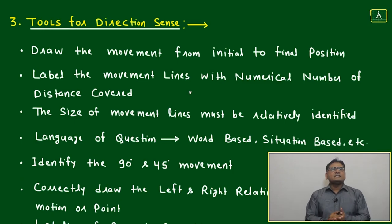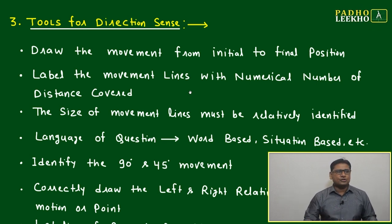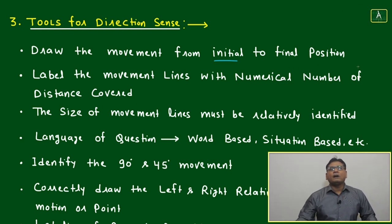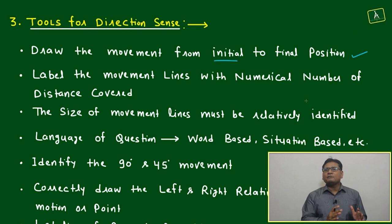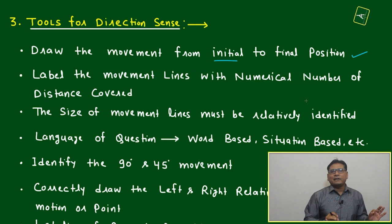Now I will discuss a few tools and precautions when solving direction sense questions. Draw the movement from initial to final position - this is your first job. Similar to making a family tree for blood relations, when dealing with direction sense questions, you make the movement diagram. Without making a movement diagram, you will not get the correct solution. The first and foremost tool is making the movement diagram.